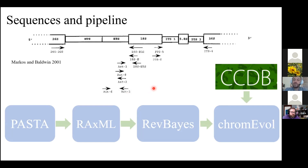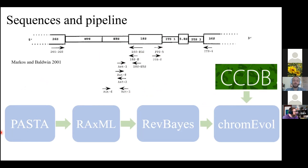The inputs to ChromoVol are a list of chromosome counts and a tree. The tree was constructed from ETS and ITS sequences pulled from GenBank, aligned in PASTA, assembled into a starting tree in RAxML, then dated using RevBayes, and then input into ChromoVol.